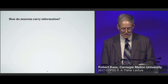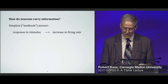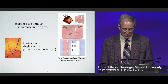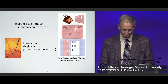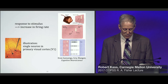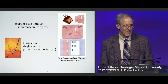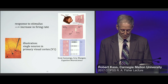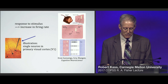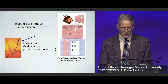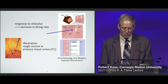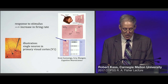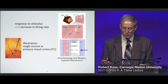A fundamental question in neurophysiology is: how do neurons carry information? The simplest textbook answer is that a neuron responds to a stimulus by increasing its firing rate. Here's a textbook drawing showing a monkey trained to look at the center of a screen while an electrode records spikes from a single neuron in his primary visual cortex — area V1 — where information from the eye first enters the cortex, the gray matter of the brain. When a bar of light is moved across a small segment of the visual field known as that neuron's receptive field, it starts to fire much more rapidly.